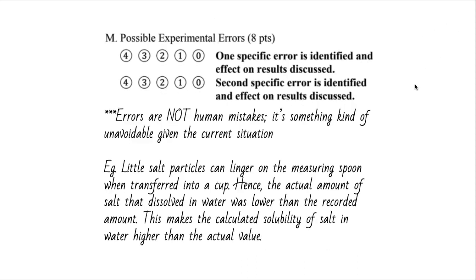We move on to possible experimental errors. This year I think it's a little easier, or maybe we just did an overshot for the past couple of years. One specific error and two specific, so two total errors need to be identified and discussed. You need to take note that errors are not human mistakes. It's not something like I spilled water. That was not necessary and it is totally avoidable.